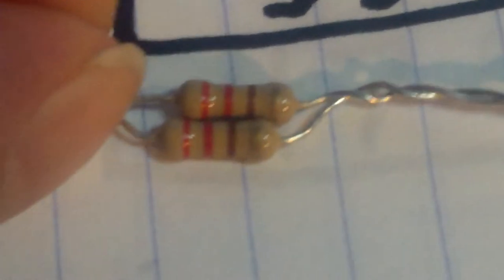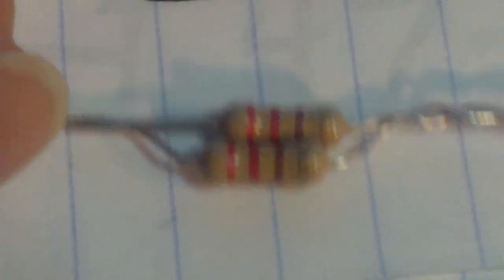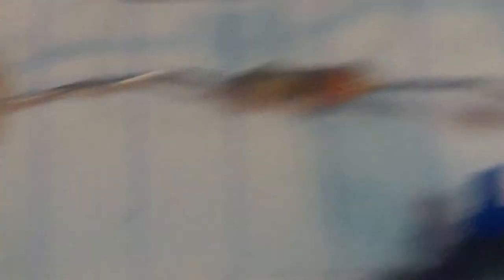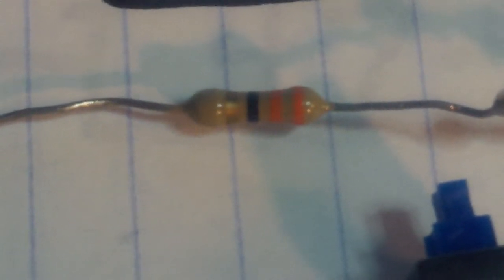Alright, so there you go. If you're using 9 volts, then get two 220 ohm resistors, put them in parallel with each other, and that will be your 100 ohm resistor for 9 volts. But if you're using 5 volts, then you're going to use the 33 ohm resistor, which is orange, orange, black.